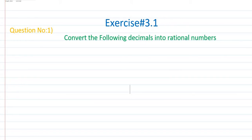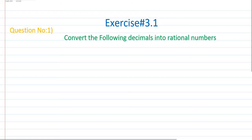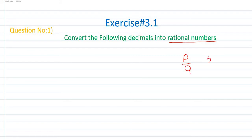Hello guys, hope you will be fine and taking good care of your health. Welcome to this video. My name is Sagar Ahmed, I am your math teacher, and in this video we are starting Exercise 3.1, question number one. In question number one we have to convert the following decimals into rational numbers. First of all, a rational number is a number written in the form of P over Q, like 5 over 3 or 7 over 9.